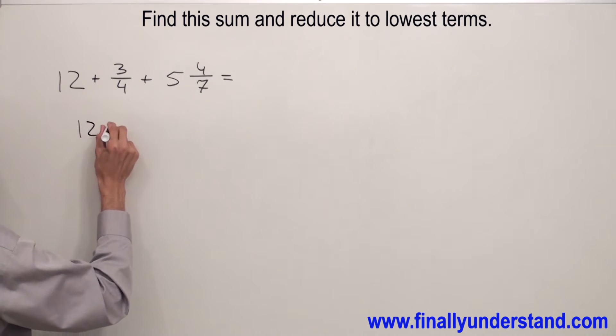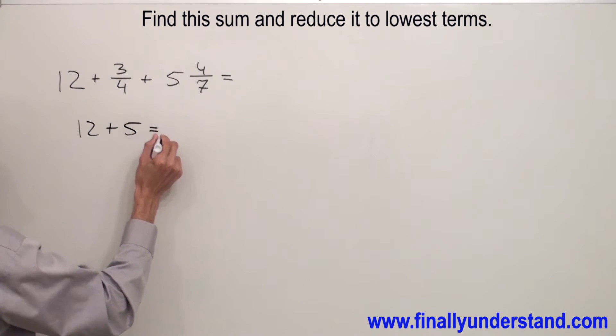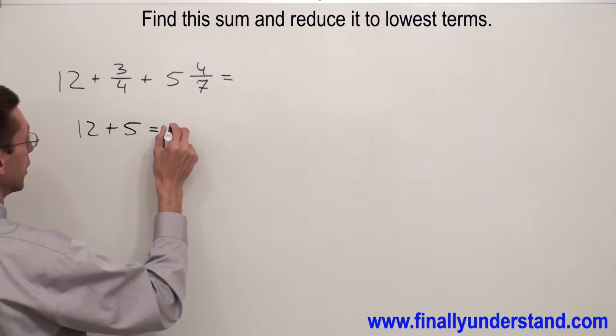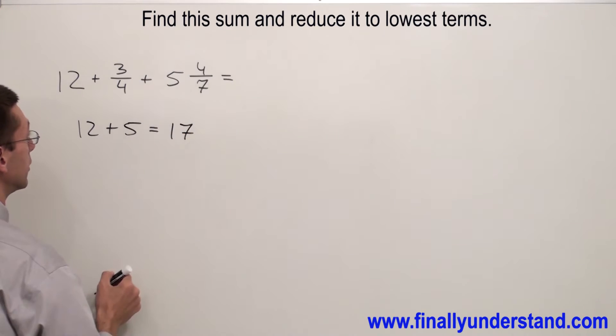So I have 12 plus 5. 12 plus 5 equals 17. Next we have to add fractions.